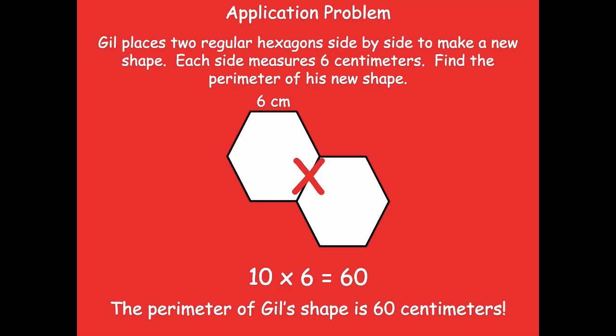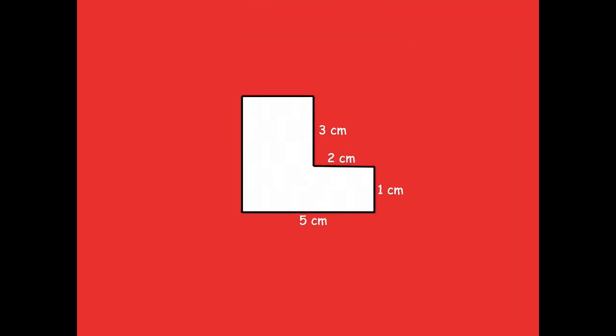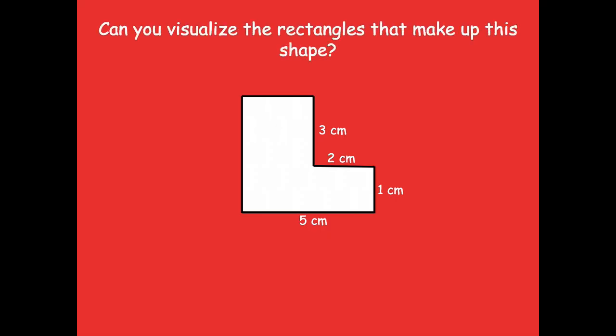Just remember when we're doing perimeter, you don't count any of those inside parts — it's just the outside part of a shape. All right, so let's get started with our lesson for today. Here we have this shape. Can you visualize the rectangles that make up this shape?